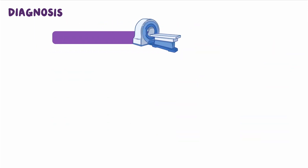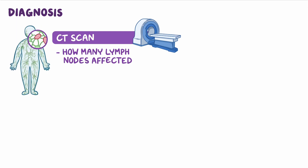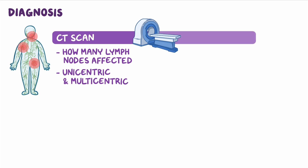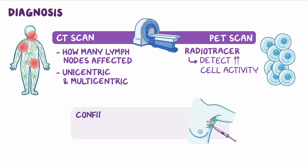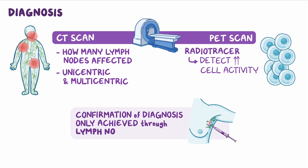Imaging techniques such as a CT scan may be useful to detect how many lymph nodes are affected and distinguish between unicentric and multicentric disease. Additionally, a PET scan, which uses a radiotracer to detect increased cell activity, may be done to identify small collections of fast-growing cells that might not be visible with other imaging studies. Confirmation of the diagnosis can only be achieved through a lymph node biopsy showing features of Castleman disease.